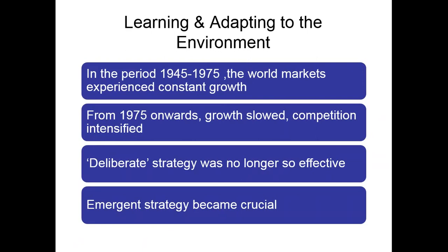In the 1980s, growth slowed, competition intensified, and the deliberate strategy of mid-range planning was no longer totally effective. This led to the concept of emergent strategy. Professor Henry Mintzberg of McGill University in Canada published excellent works — such as The Rise and Fall of Strategic Planning — arguing that if you plan too far ahead your reaction speed will be slow and competitors will become more agile and take over your market space. This is particularly true in areas with disruptive technologies.